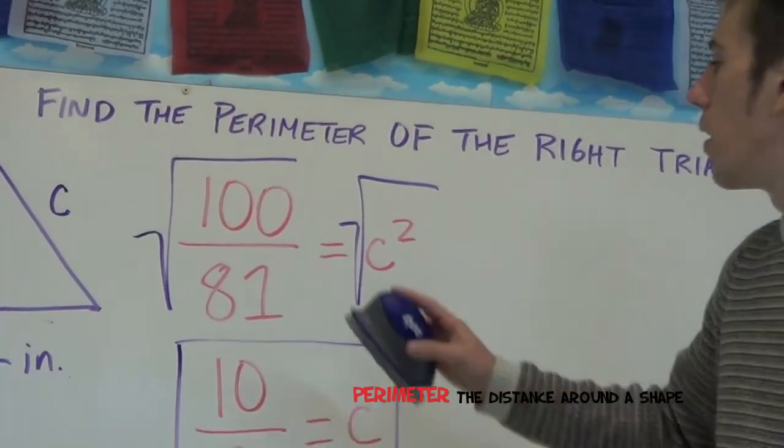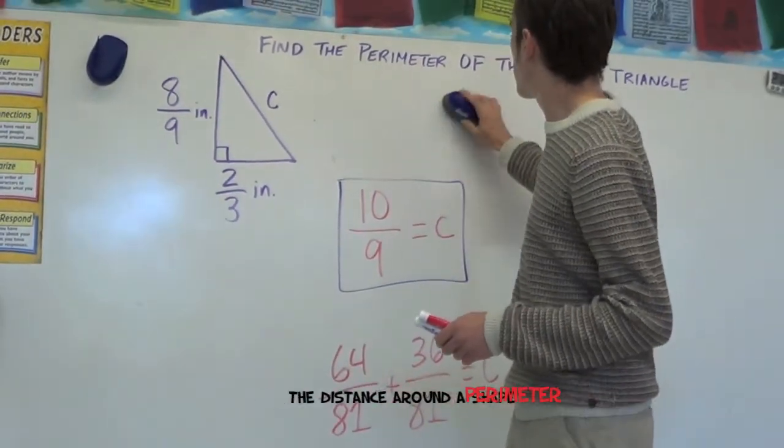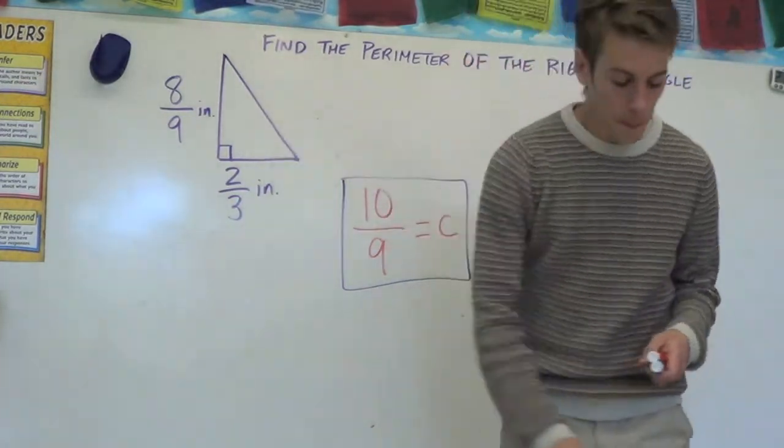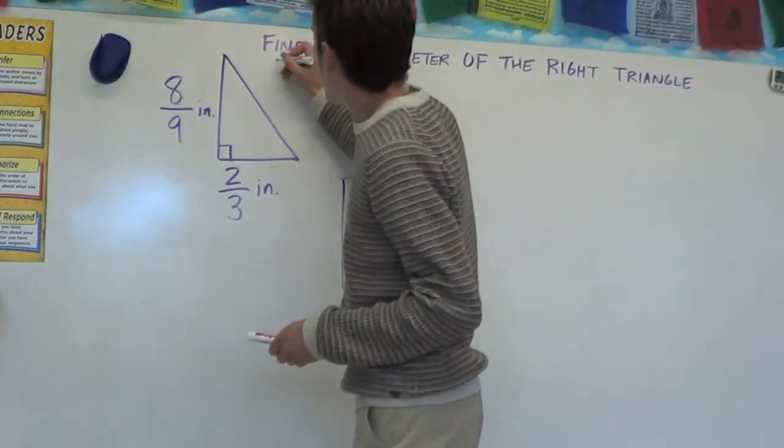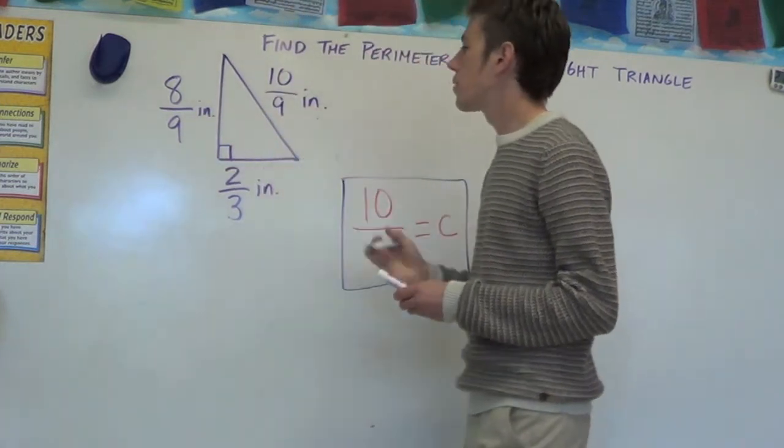So we actually have another whole step to this problem, which is to take C, our hypotenuse, and add it to the other two sides.